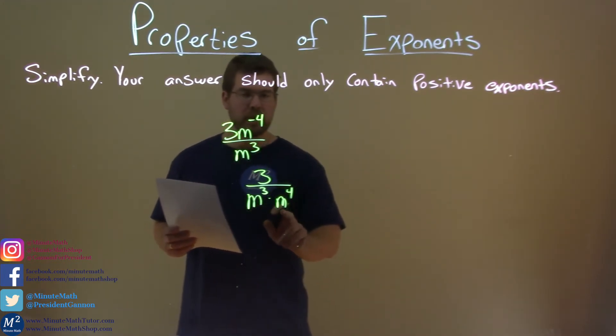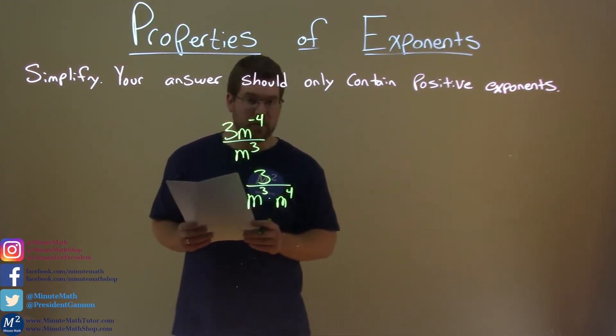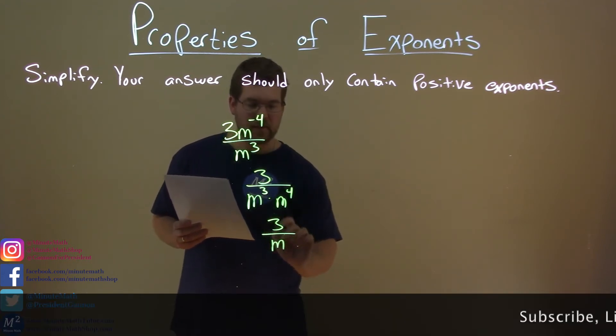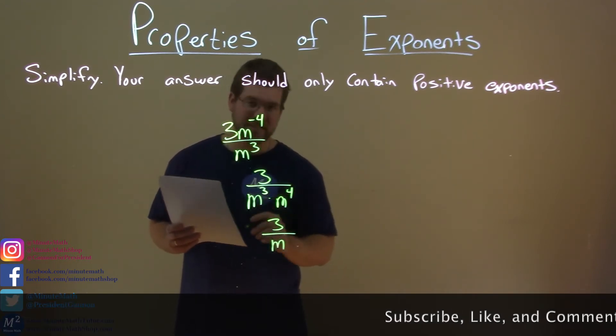Same base, that means we add the exponents here, and so we have 3 over m to the 3 plus 4, which is 7.